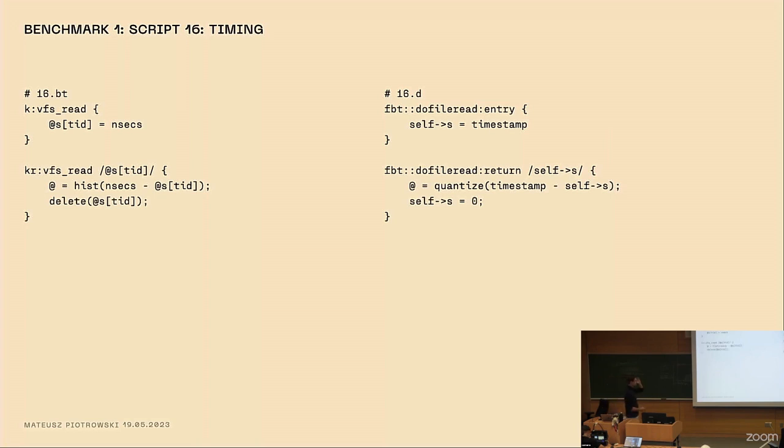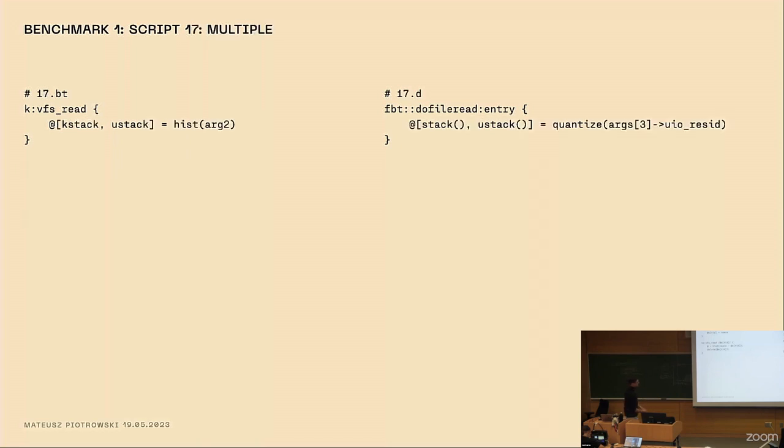Then the overhead of user stack and kernel stack. It also maps very cleanly. The use of histograms, the names are different. So in BPF trace, we have hist; in DTrace, we have quantize. But ultimately, it's the same idea. Then the timing. Trying to figure out what was the overhead in case we do the very popular tracing of how long it takes for a function to execute. We start at the do_file_read entry, then we take a copy of the timestamp, and then we take a look how long it took later on in the return.